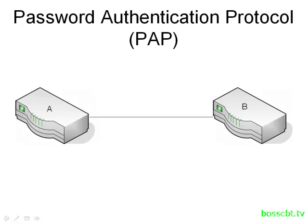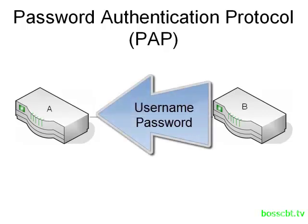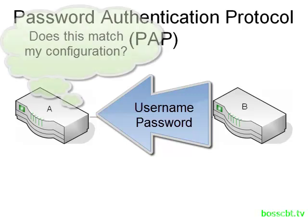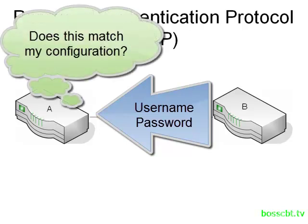We'll begin with PAP, which stands for Password Authentication Protocol. This is a very basic approach to authenticating two devices. A router is going to send a username and password across the link to the other router. Router B sends the password and username over to router A, which has that username and password configured locally. It simply compares the two, and if they match, then router B is authenticated.